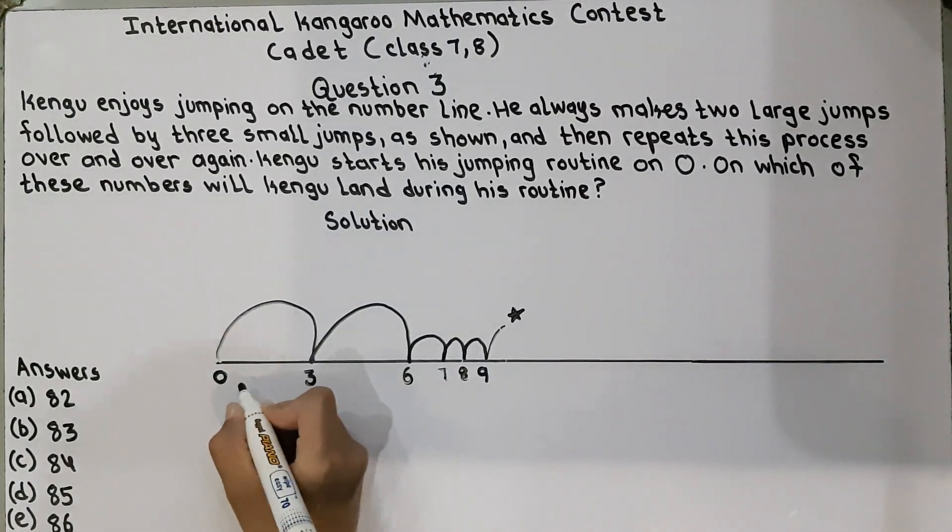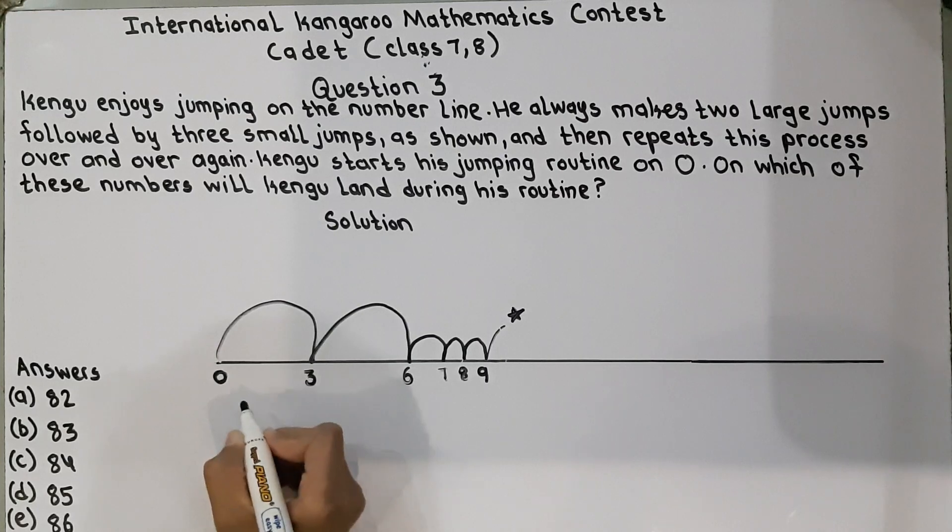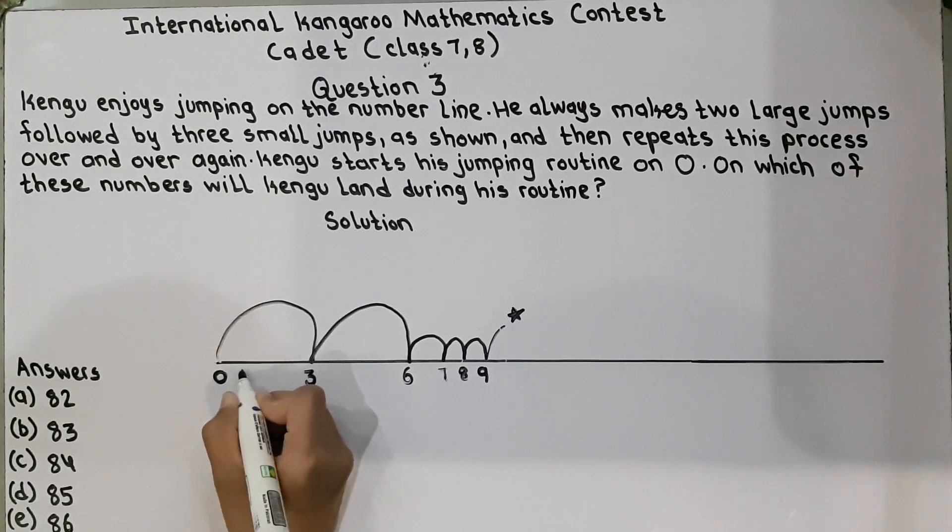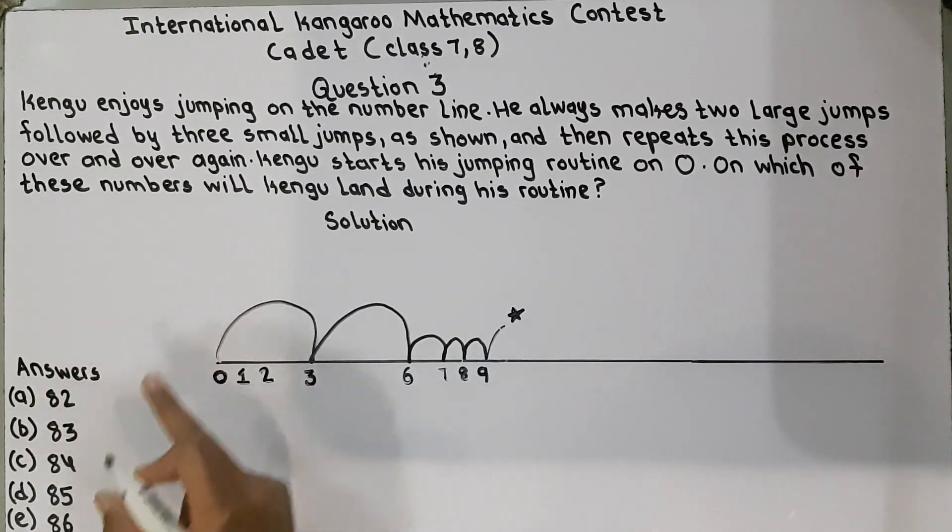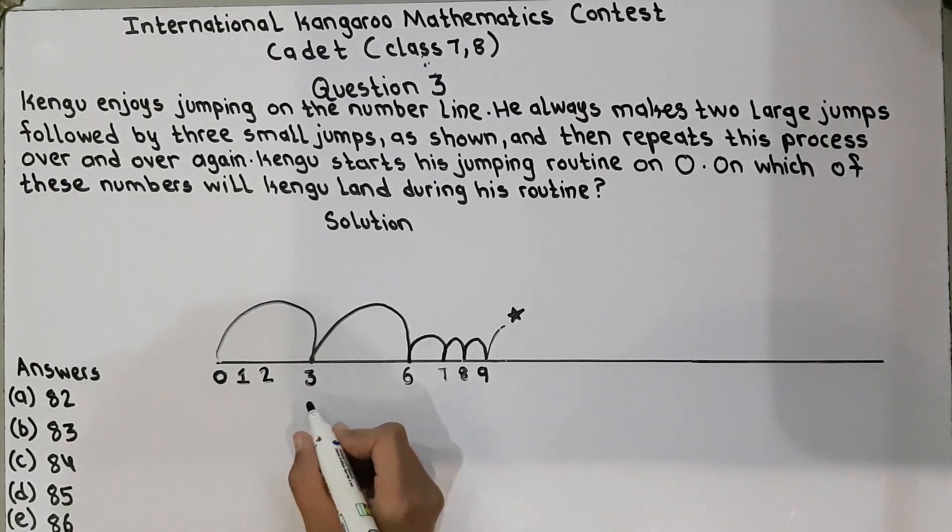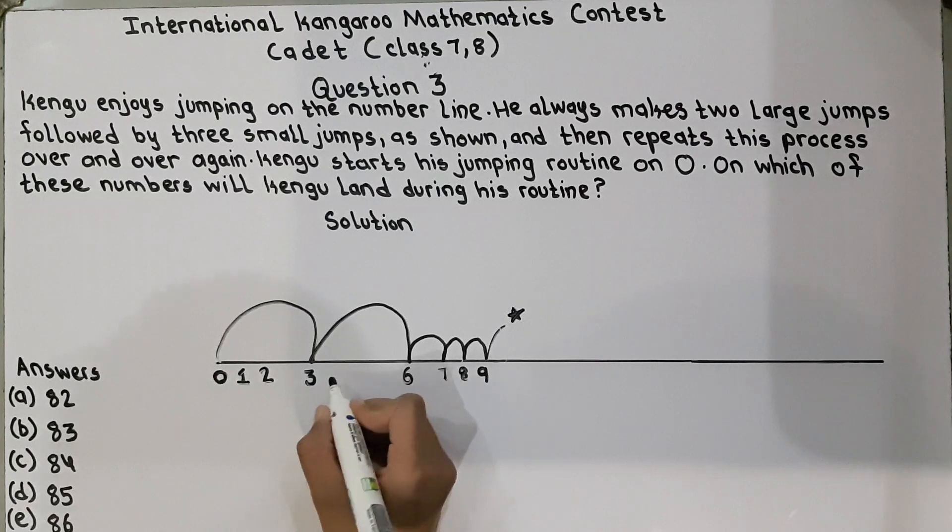And the kangaroo leaves two numbers between his one large jump. It means he leaves one and two - two numbers between his one jump, long jump, and this long jump. He also leaves two numbers. Four and five. Three.